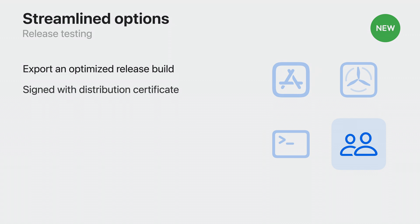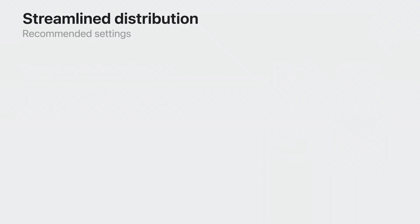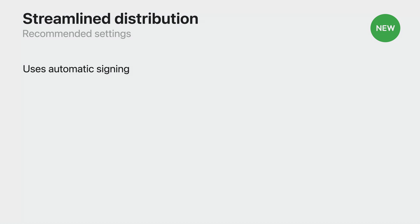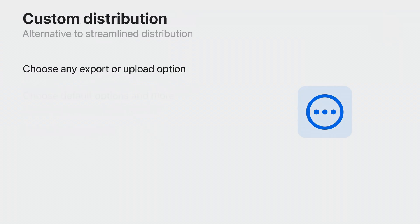Or you can use the Release Testing option, which signs your app similarly to how it is signed on the App Store, and can be installed on your team's registered devices. Each of these streamlined options use recommended settings, including automatic signing to re-sign your app with no configuration necessary, embedding app symbols for server-side crash log symbolication, auto-incrementing your app build number to get it ready for the App Store, and stripping symbol information from Swift embedded dylibs to make your app smaller. If you need something that isn't available as a streamlined option, you can always choose Custom.